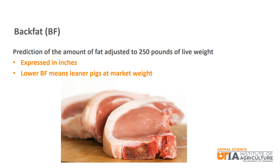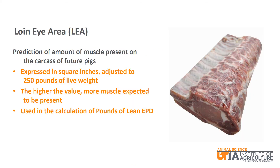Next are three carcass oriented EPDs beginning with back fat or BF. Back fat is a prediction of the amount of fat adjusted to 250 pounds of live weight, expressed in inches. A lower back fat value means leaner pigs at market weight. The loin eye area EPD or LEA is a prediction of the amount of muscle present on the carcass of future pigs. It is expressed as square inches and is adjusted to 250 pounds of live weight. The higher the value, the more muscle that is expected. The loin eye area is used in the calculation of the pounds of lean EPD.